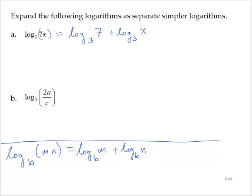Now, notice in the second exercise, we have a quotient. We also have a property of logarithms that says the log base b of a quotient of numbers is equal to the log base b of the numerator minus the log base b of the denominator.